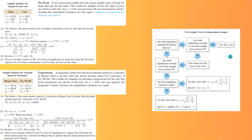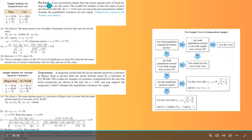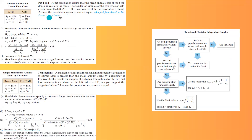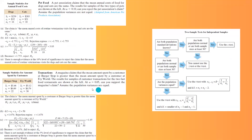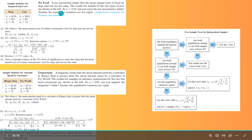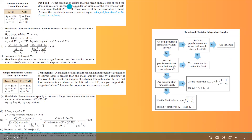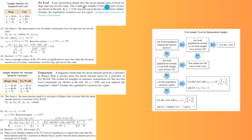Let's look at two examples side by side. The first is pet food, where population variances are not equal, and the second is transactions, where population variances are equal. A pet association claims that the mean annual costs of food for dogs and cats are the same. The results for samples of two types of pets are shown on the left-hand side.